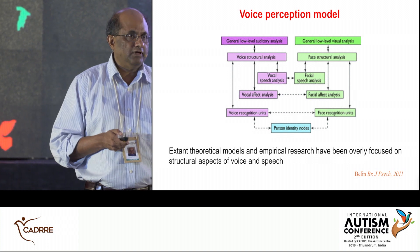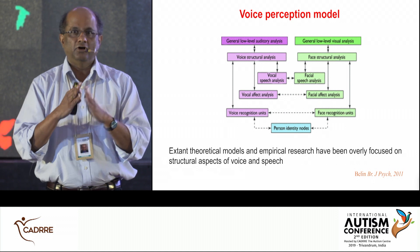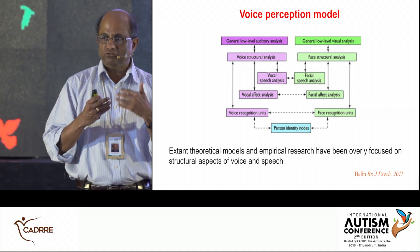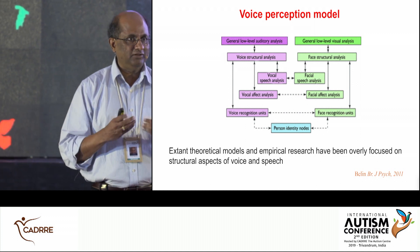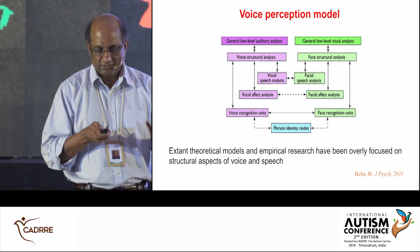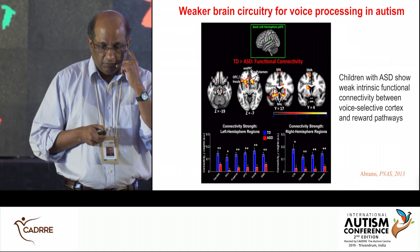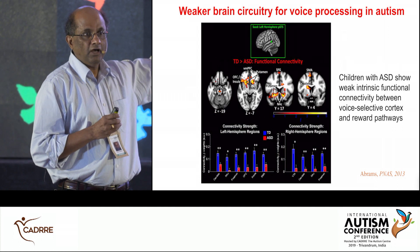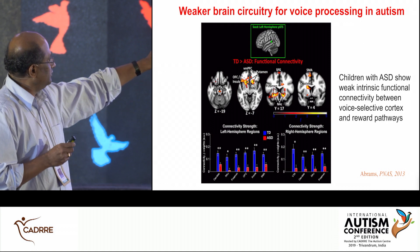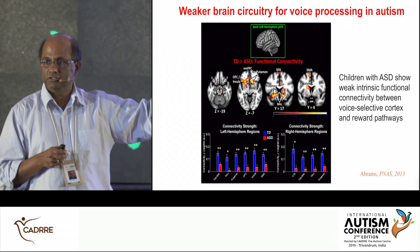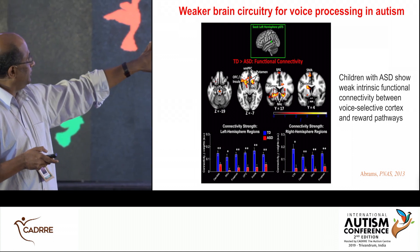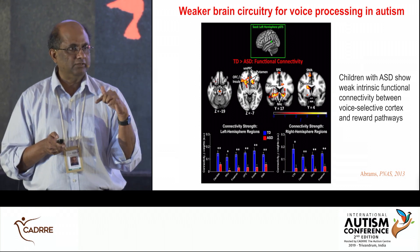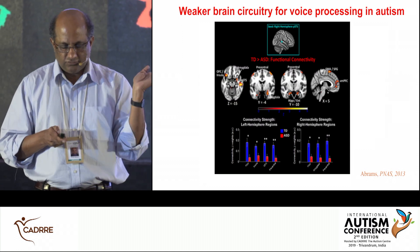Most studies of voice processing are focused on phonemic and structural aspects, but the voice is really fundamentally an instrument of social communication. What we did was look intrinsically at the connection pattern of the voice selective cortex — how connected is that green spot to the rest of the brain in typically developing children versus children with autism. This study shows that the same reward pathways, in fact an extended system, are weaker in children with autism: the voice selective cortex is weakly connected.